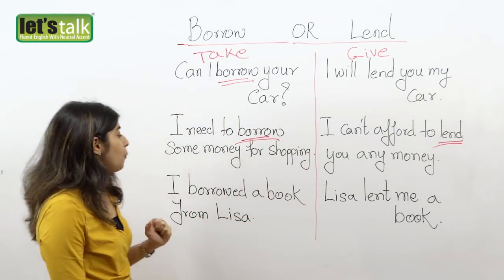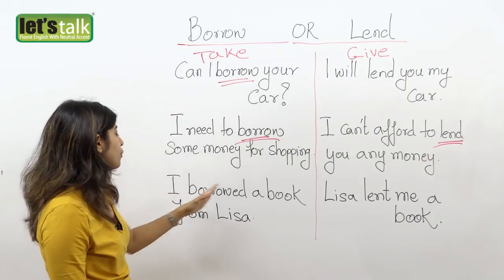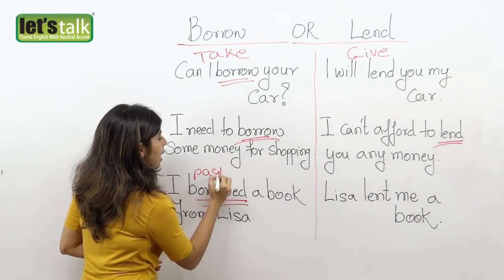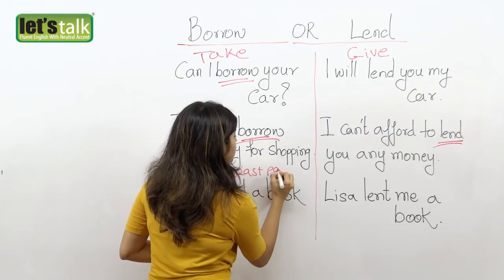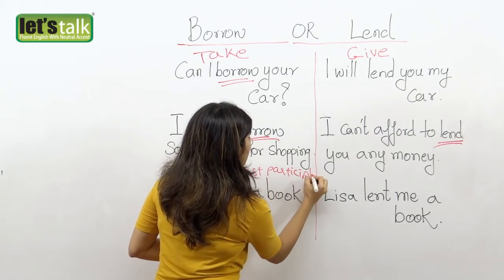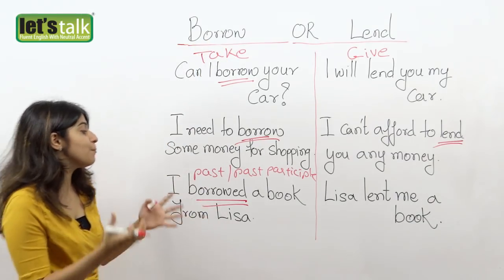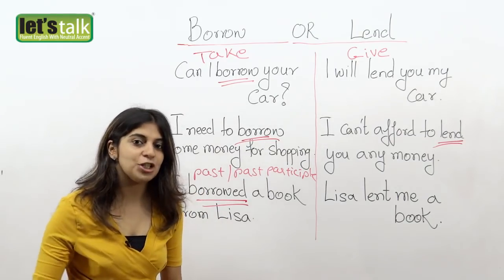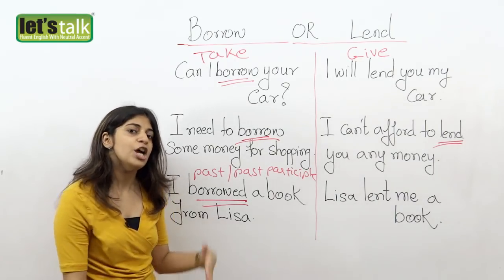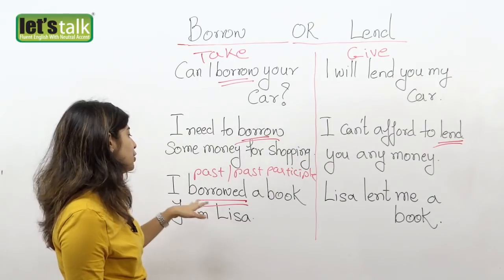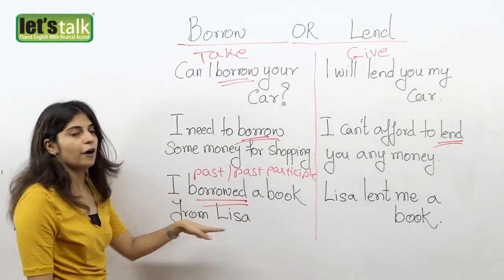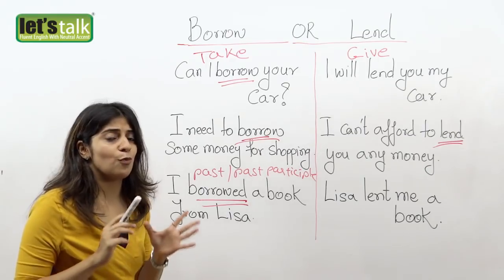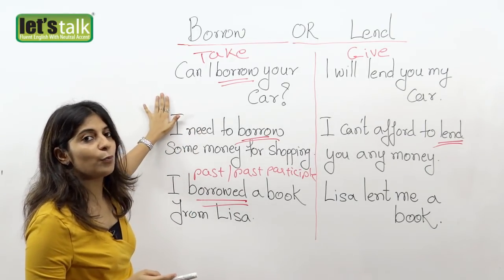So I hope you got the difference. We would look at another sentence: "I borrowed a book from Lisa." Now borrowed is the past and past participle of the word borrow. She borrowed a book from Lisa, of course with the intention that she would give it back to Lisa later — once she finishes reading it, she would return it. So that sentence says: "I borrowed a book from Lisa" — meaning I have taken the book from Lisa. If you are a little confused when to use the word borrow, just try substituting it with the word take.